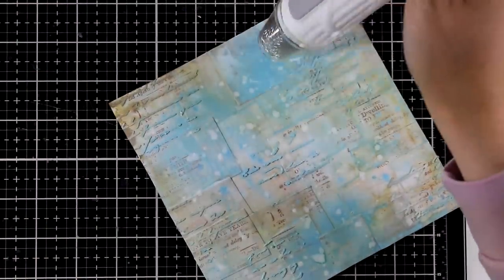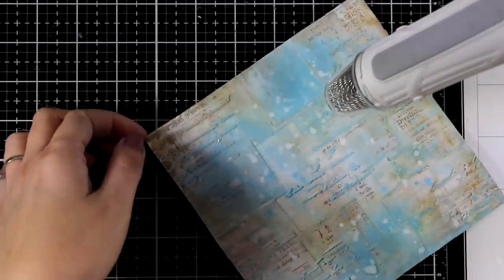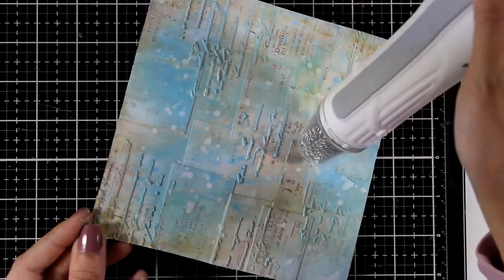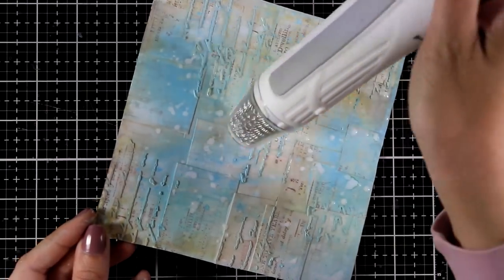Hopefully the camera picks up all the texture that I have from the tiling of the patterned paper as well as the stenciling. So I'm going to leave that aside and I will start working on my focal points.